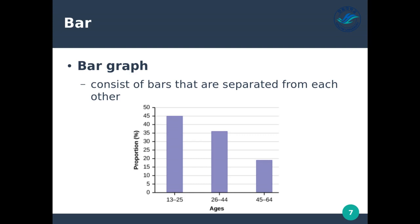Bar graphs consist of bars that are separated from each other — very useful for showing different groups or different measurements. You can use them to measure almost anything. Here we have age ranges: 13 to 25, 26 to 44, and 45 to 64, and we have proportion on the vertical axis. Let's say it's the proportion of people sampled in a survey — so 13 to 25 is 45% of the overall sample.